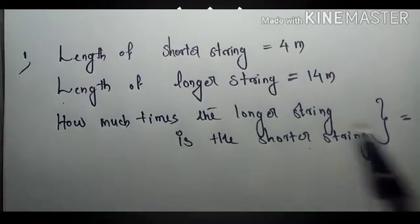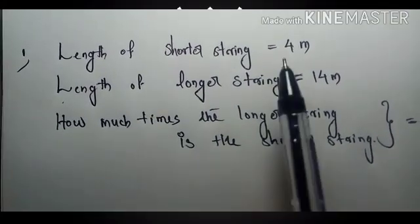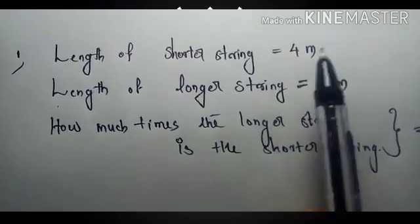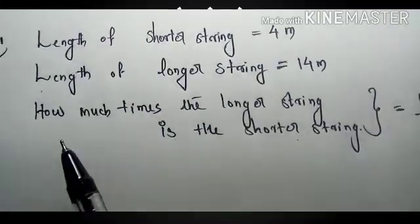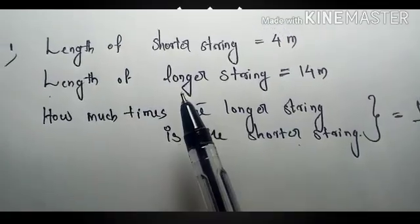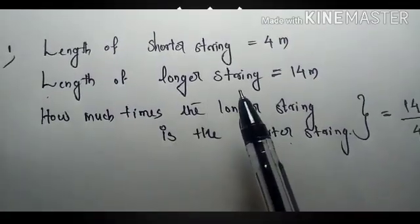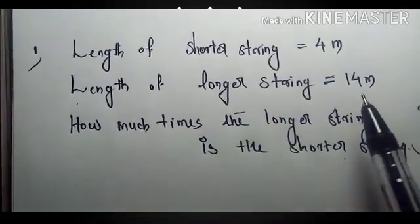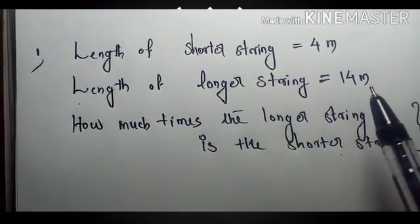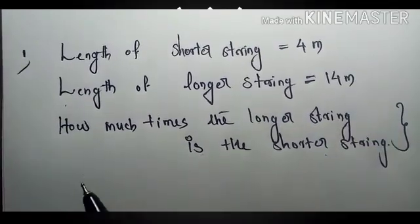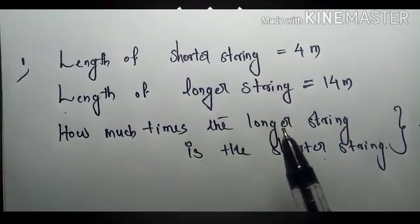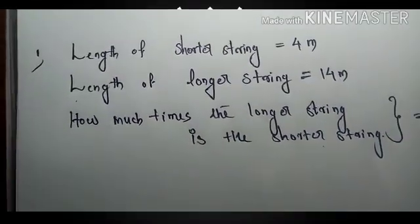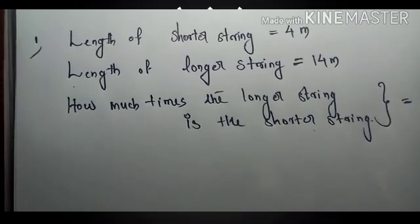The length of the shorter string is 4 metres. The length of the longer string is 14 metres. First question: how many times the longer string is the shorter string?